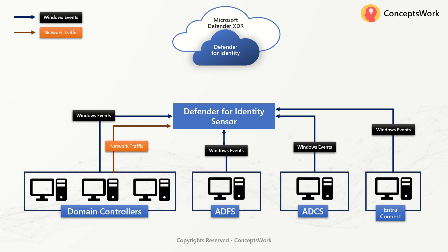The purpose of this sensor is to capture Windows events from those machines as well as network traffic from your Domain Controller. Why is this required? Consider that there is some activity happening in your on-prem environment — for example, some group membership change, LDAP discoveries, or reconnaissance activity. This information has to be routed to a cloud service so it can be shown on security.microsoft.com. Similarly, if there is some malicious activity happening on your ADCS server, there must be some service monitoring that activity through logs.